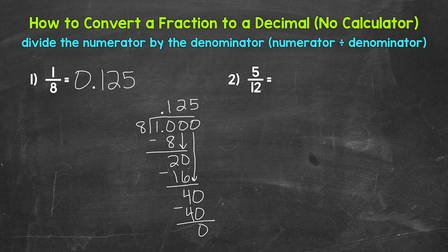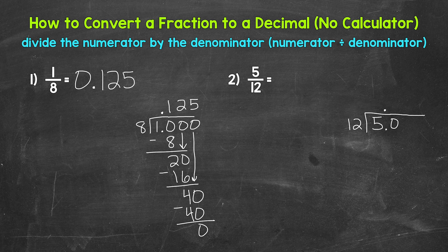Let's move on to number two, where we have five twelfths. So we need to do five divided by 12. Let's set this up: we have five divided by 12. How many whole groups of 12 in five? We can't do that. So we need a decimal and a zero in order to work through this. Bring the decimal straight up, and we can think of this as 50 divided by 12.